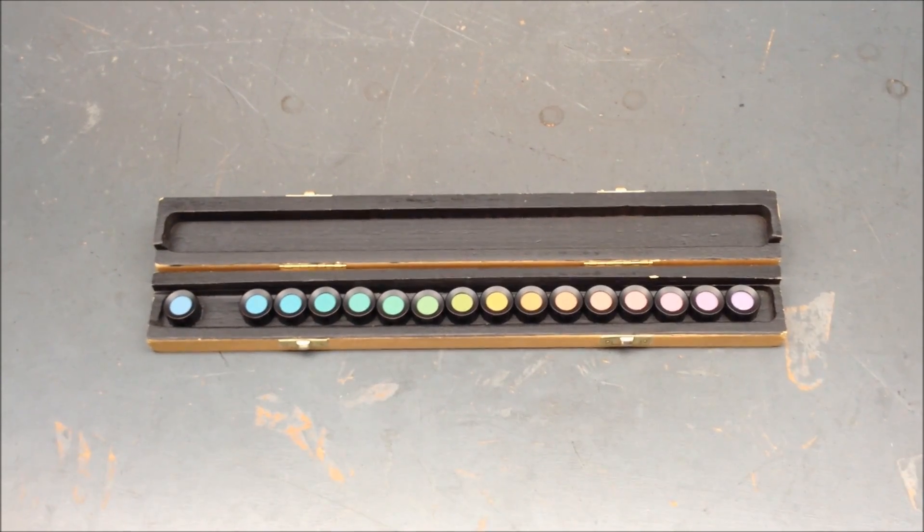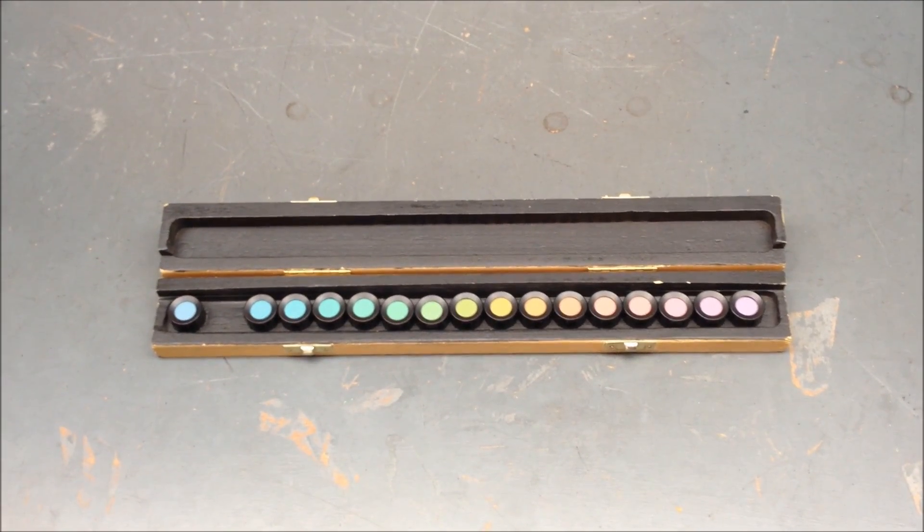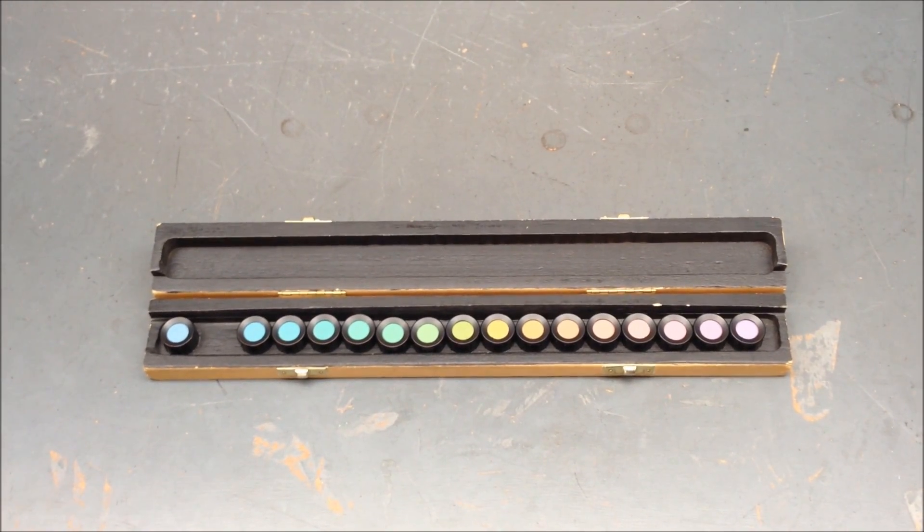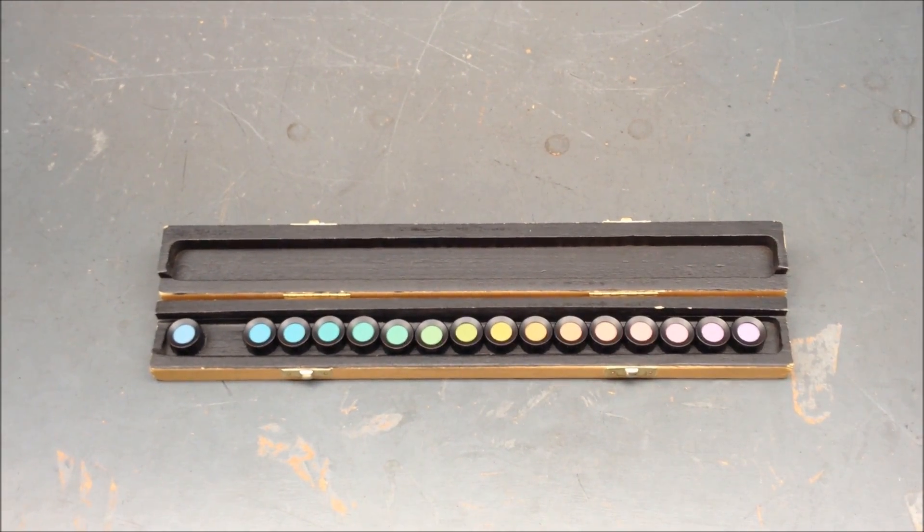This is the Farnsworth D15 test. This test is used throughout the world as a grading test for occupation selection. The patient has to arrange 15 moveable hue samples into a natural color sequence which you see here.